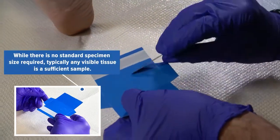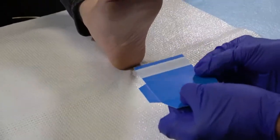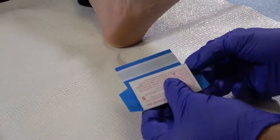Any amount of visible tissue is typically sufficient for testing. After collecting the specimen, fold the bottom part of the collection pack labeled A up to cover the sample.